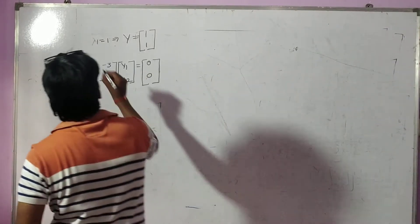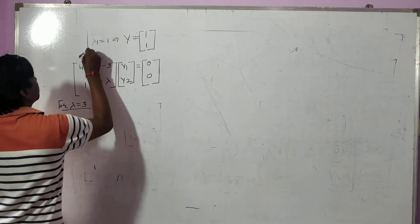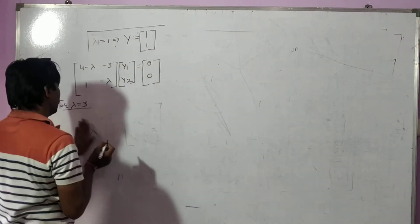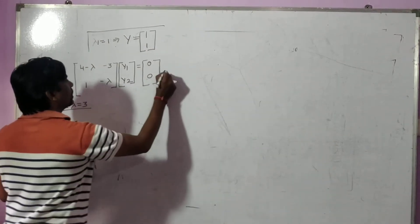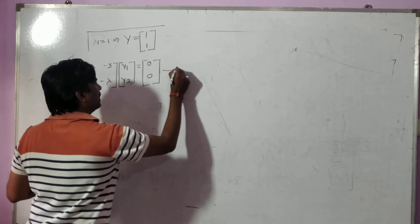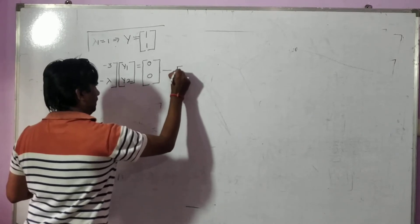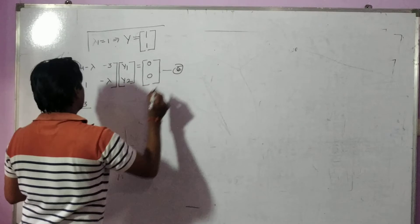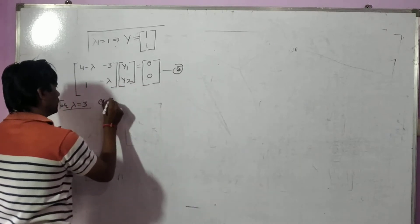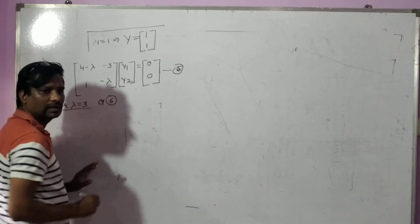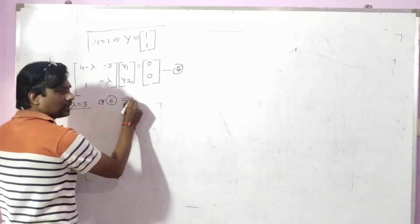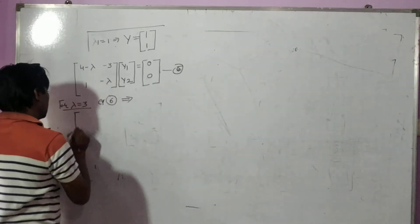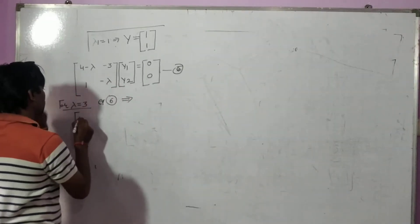For lambda equal to one, we already found the solution. Now we need to find it for lambda equal to three. So therefore, this is equation number six. Therefore equation number six implies: we put in four minus one.